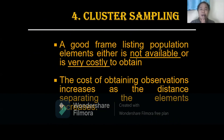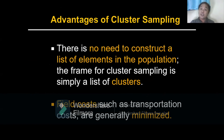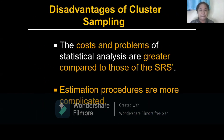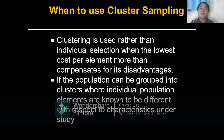The last sampling design is cluster sampling. It is used when a good frame for listing population elements is either not available or very costly to obtain. The cost of obtaining observations increases as the distance separating the elements increases. Please review the advantages and disadvantages of cluster sampling.